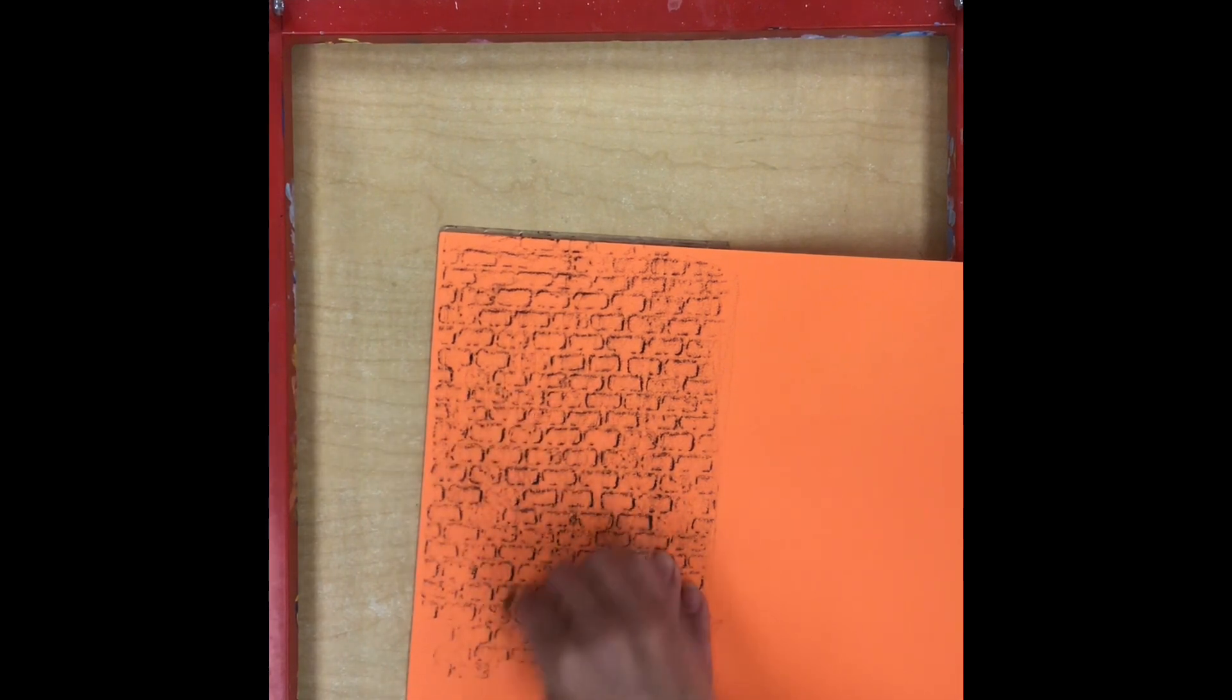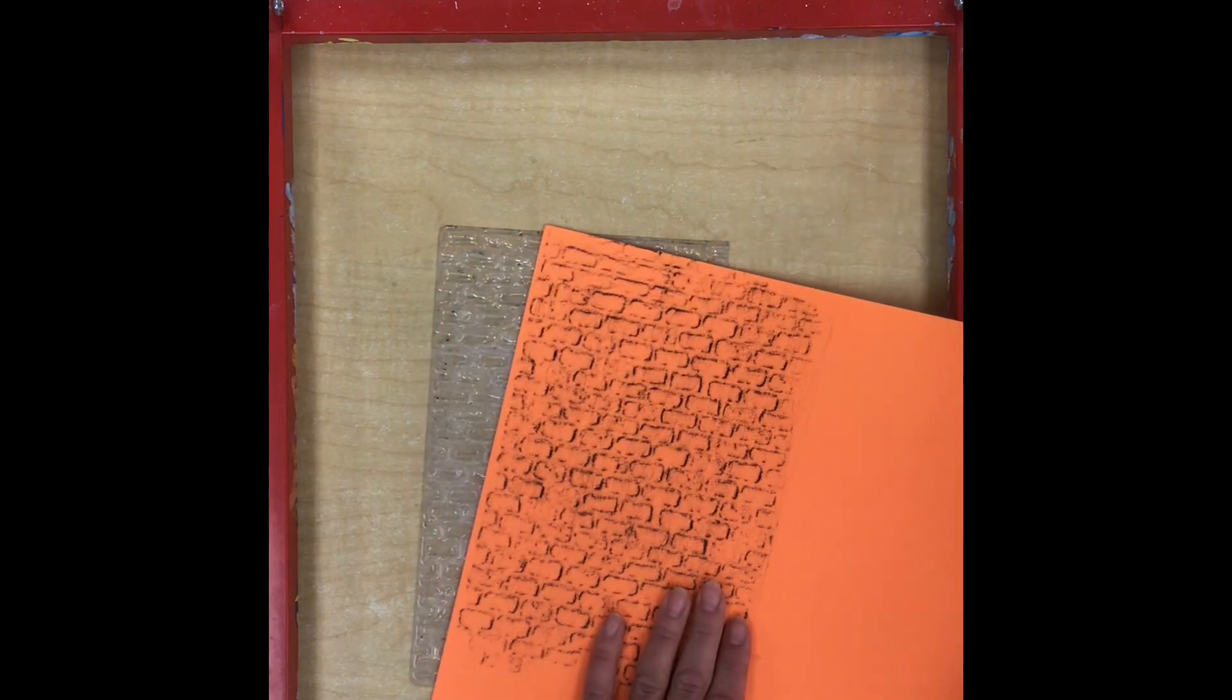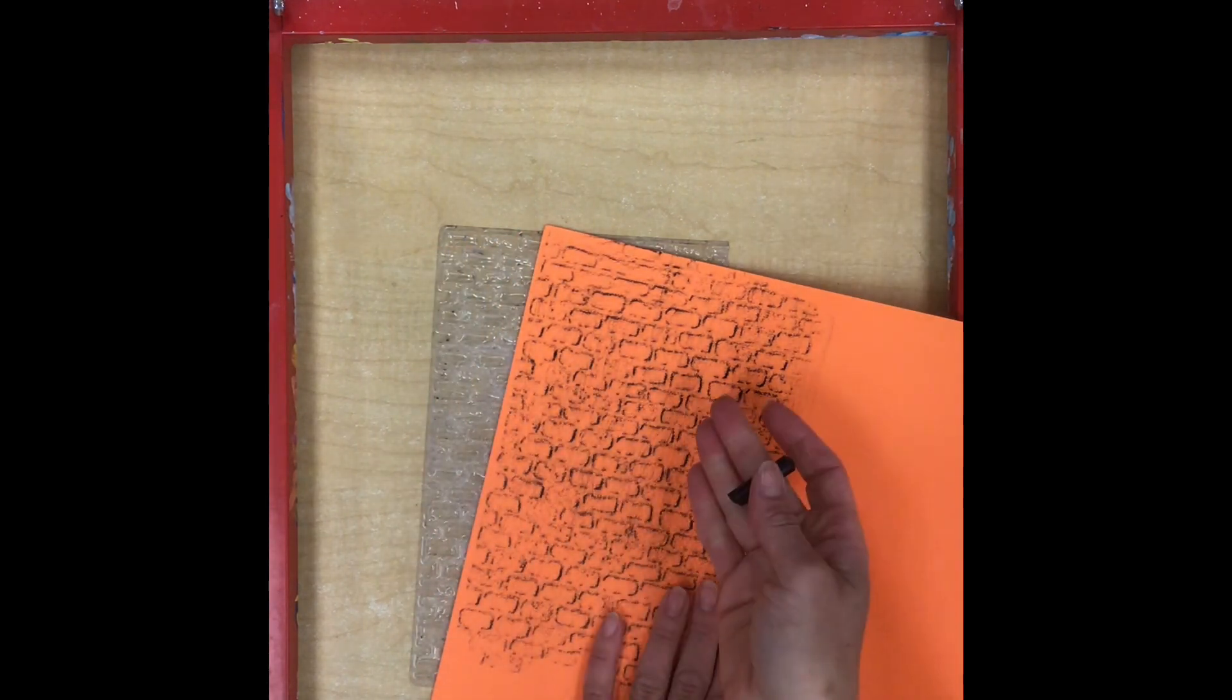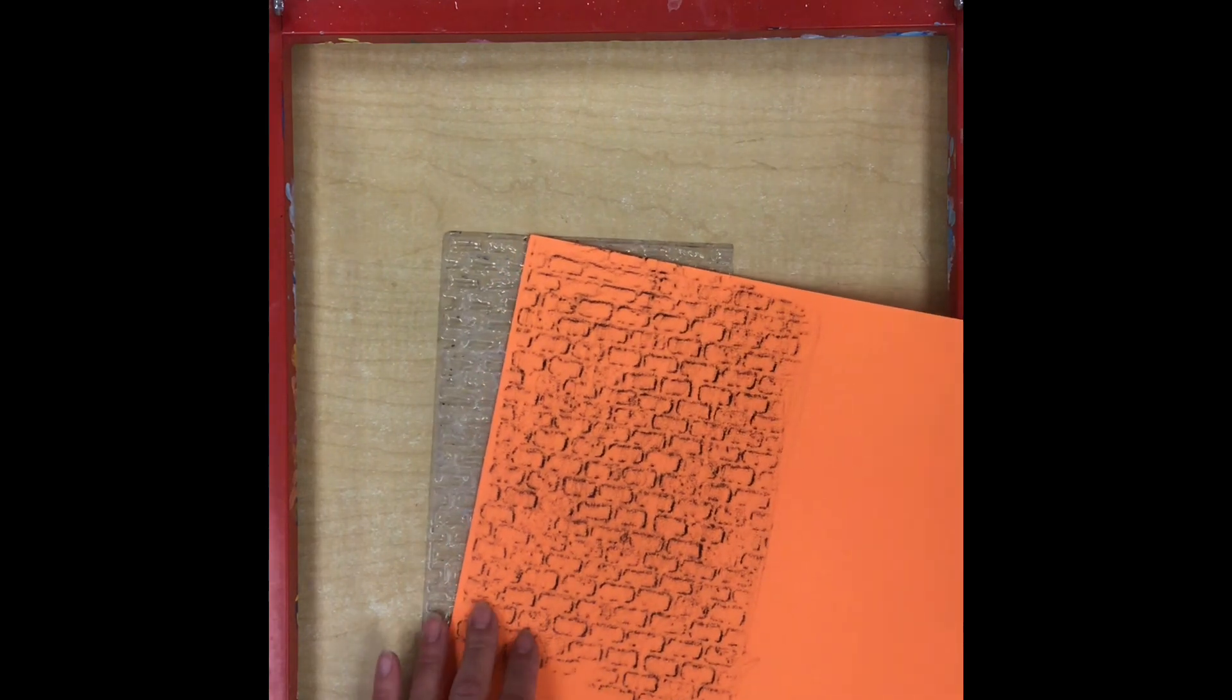As you do this, it's really important that you don't let your paper rub around on the plate because that will mess up the design. It will look all blurry and messy, so you really have to be careful to hold it in place.